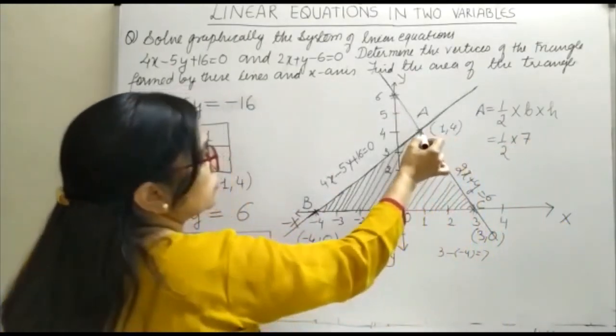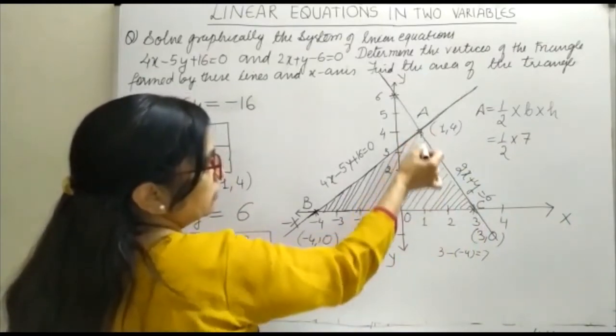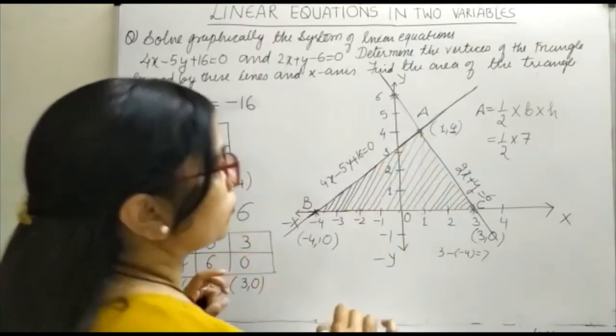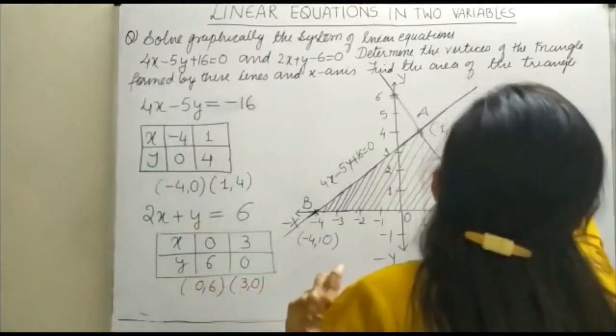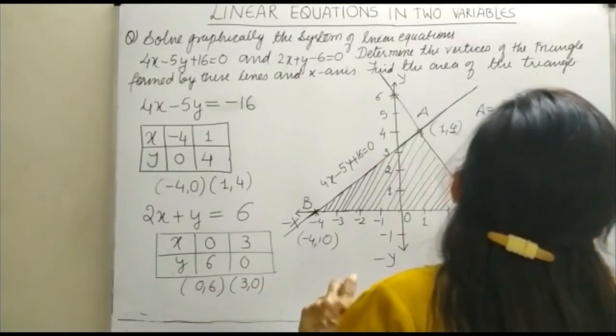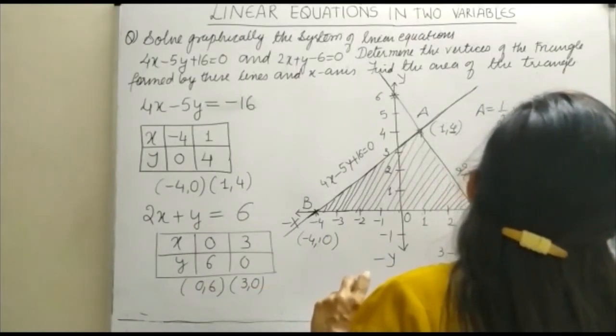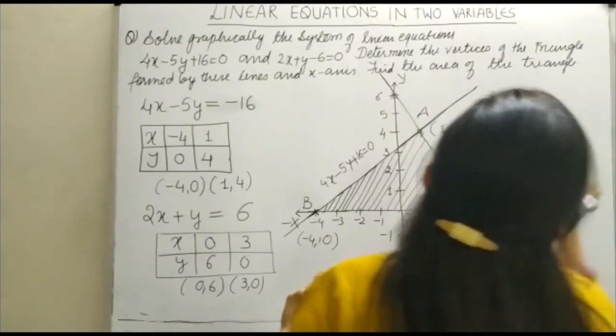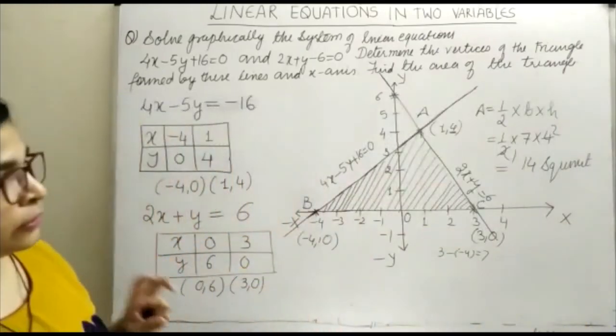Height is the distance on the y-axis. What is the distance here? 4. So the height of the triangle, the altitude, is 4. Half of 7 times 4 equals 14. Your area is 14 square units.